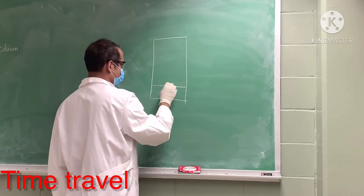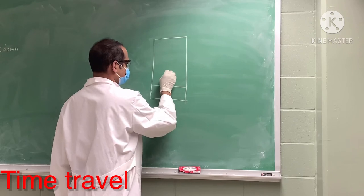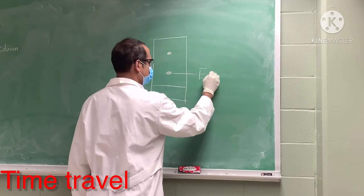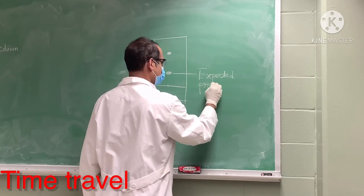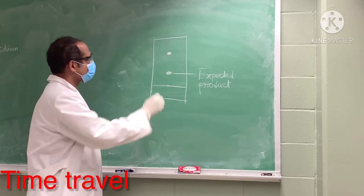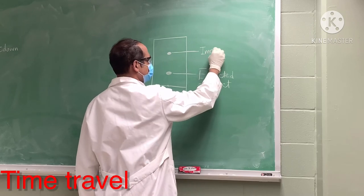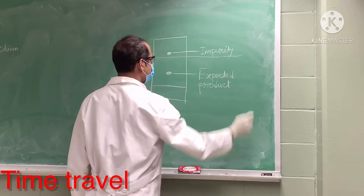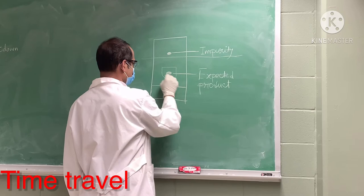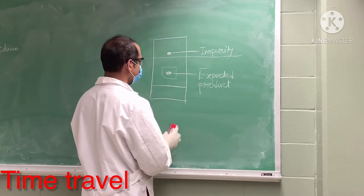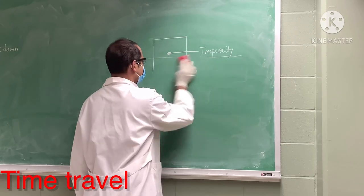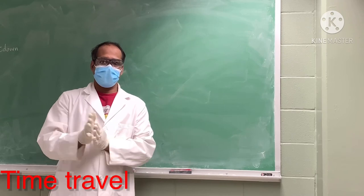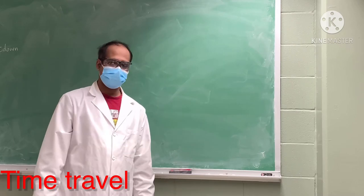Here I am drawing a TLC plate. If I run TLC with a crude compound and see that the impurity spot is at the top and my expected compound is near the bottom, the compound is more polar. For column chromatography, I would first use a less polar solvent to elute the impurity, then increase polarity to flush out my desired product. This is the theoretical basis for using TLC to plan a column.